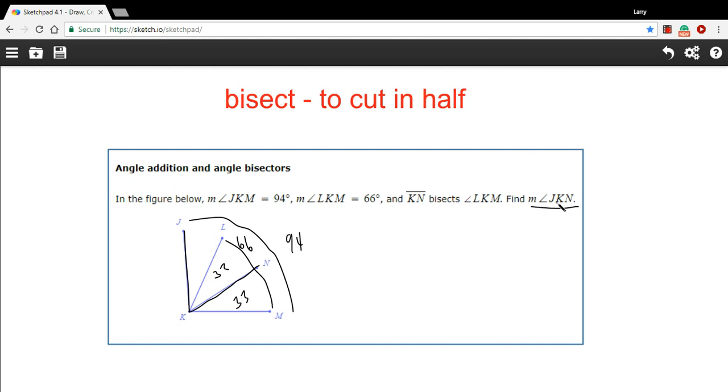So that's all the information I think that we know. And what we want to do is find JKN. So JKN would be this chunk here, plus this chunk. So we know this chunk here is 33. We need to figure out what this chunk is. And that's pretty easy to do.